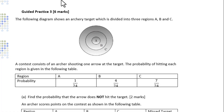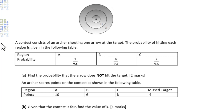This video is about discrete distribution. The following diagram shows an archery target which is divided into three regions A, B, and C. A contest consists of an archer shooting one arrow at the target. The probability of hitting each region is given in the following table. Find the probability that the arrow doesn't hit the target.